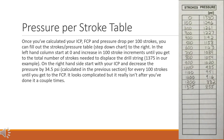Pressure per stroke table (step down chart). Once you've calculated your ICP, FCP, and pressure drop per 100 strokes, you can fill out the stroke/pressure table. In the left hand column, start at 0 and increase in 100 stroke increments until you get to the total number of strokes needed to displace the drill string — 1,375 in our example. On the right hand side, start with your ICP and decrease the pressure by 34.5 psi for every 100 strokes until you get to the FCP. It looks complicated but it really isn't after you've done it a couple of times.